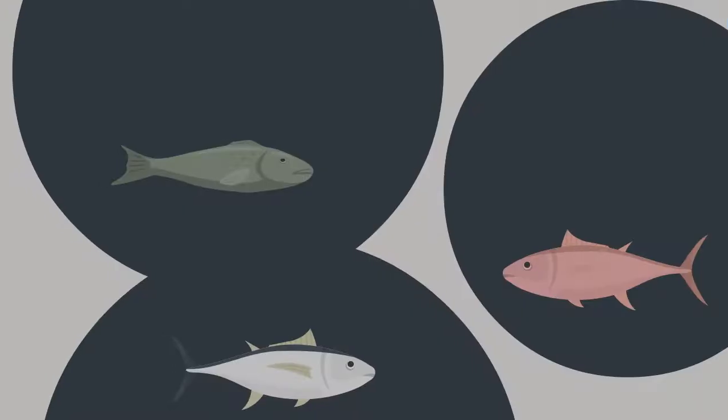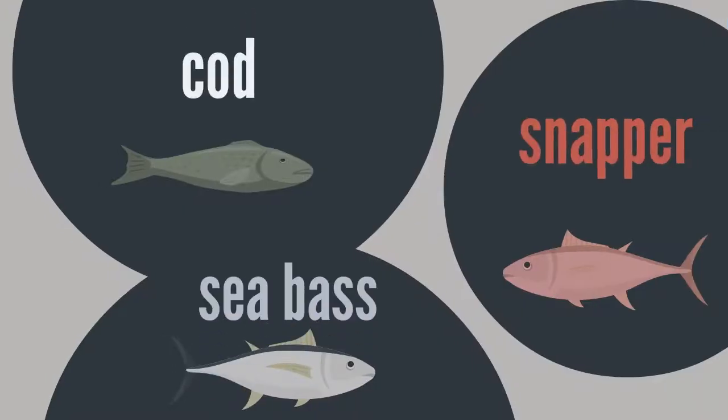For example, many of the favorite seafoods in North America, like cod, snapper, and sea bass have these traits.